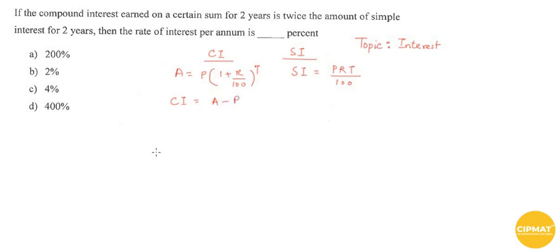We can write CI equals P times [(1 + R/100) to the power T minus 1].